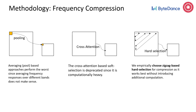The cross-attention-based soft selection is deprecated since it is computationally expensive. Average pooling-based approaches perform the worst because averaging frequency responses over different frequency bands does not make sense.